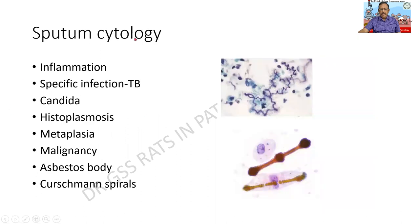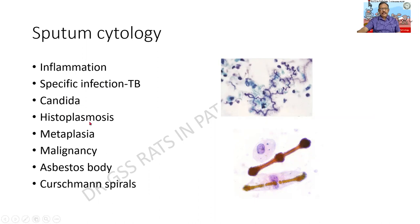First, we shall go to sputum cytology. Whenever you are asked a question, I would like you to kindly have a panel of subheadings. What can be the significance of sputum cytology? From this, we can diagnose various inflammatory disorders — acute or chronic inflammation. Sometimes specific diseases such as tuberculosis, where I might see a giant cell, or fungal infections such as Candida albicans, histoplasmosis, etc. can be identified. Metaplasia, malignancy, and dysplasia can also be identified from sputum cytology.